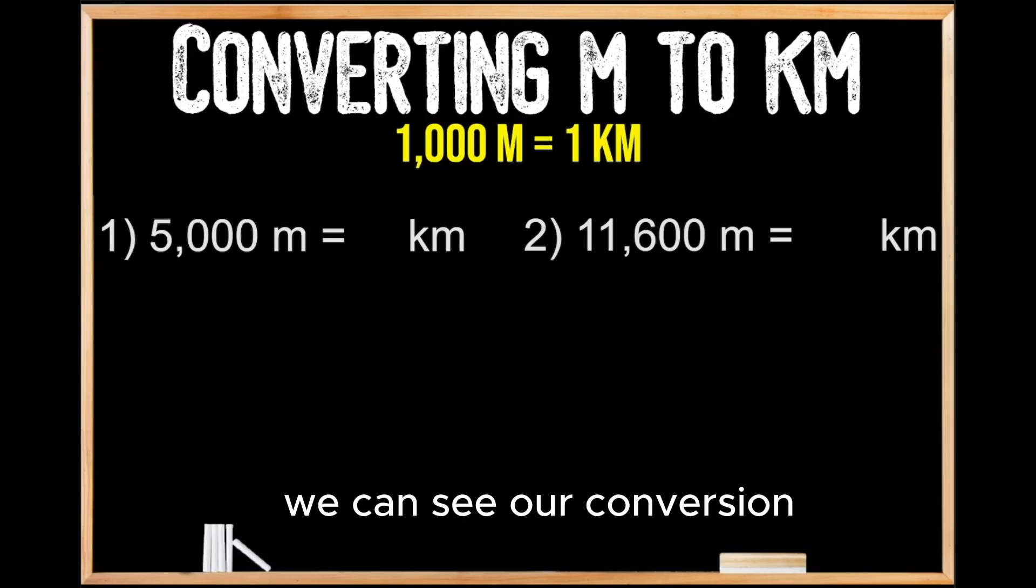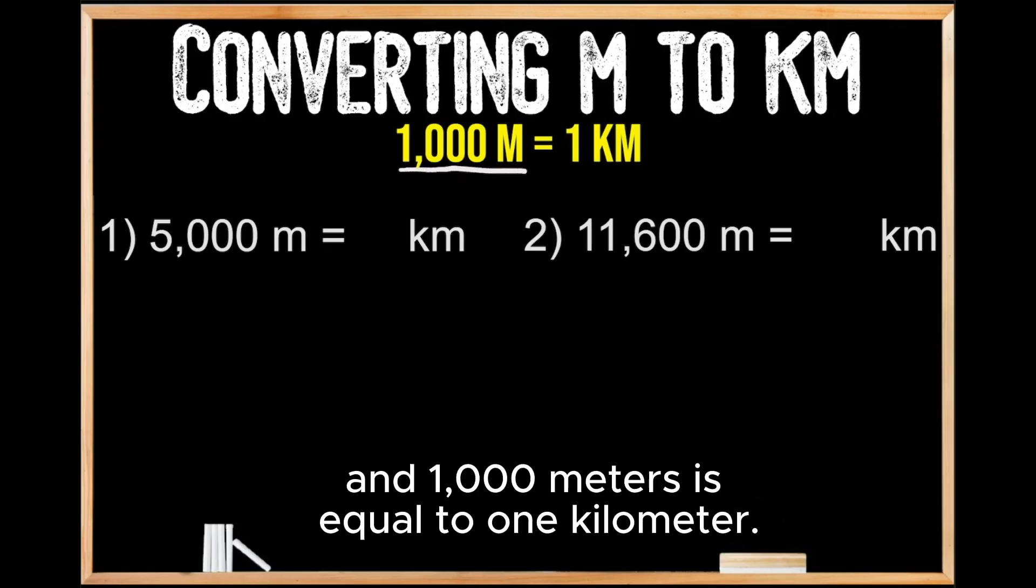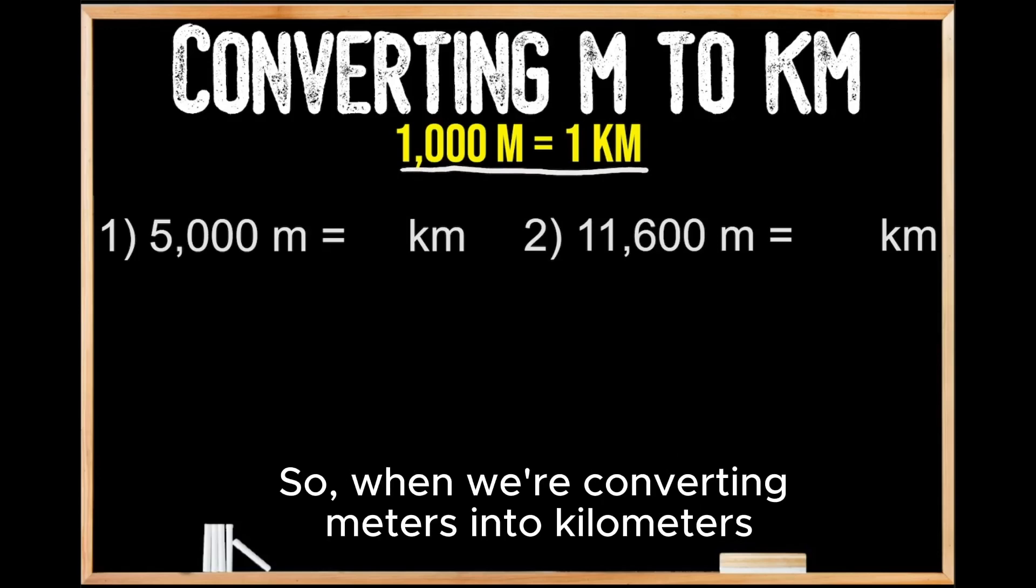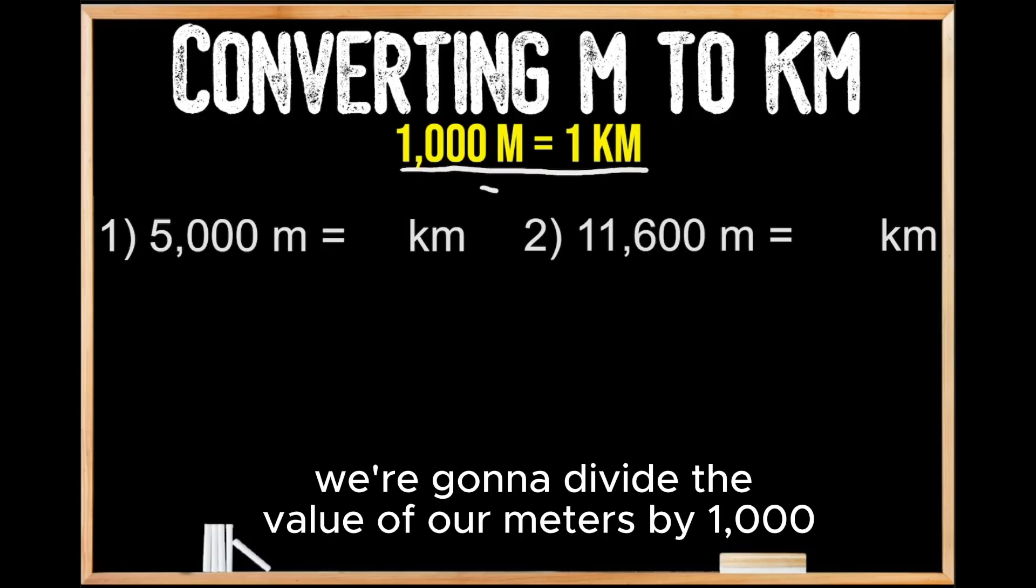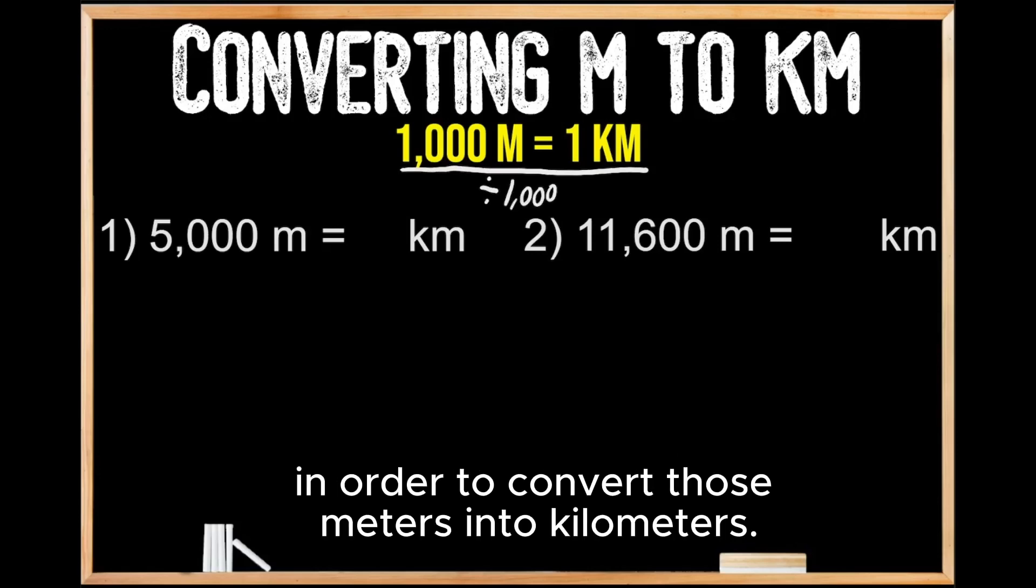Up top here, we can see our conversion: 1,000 meters is equal to 1 kilometer. So when we're converting meters into kilometers, we're going to divide the value of our meters by 1,000 in order to convert those meters into kilometers.